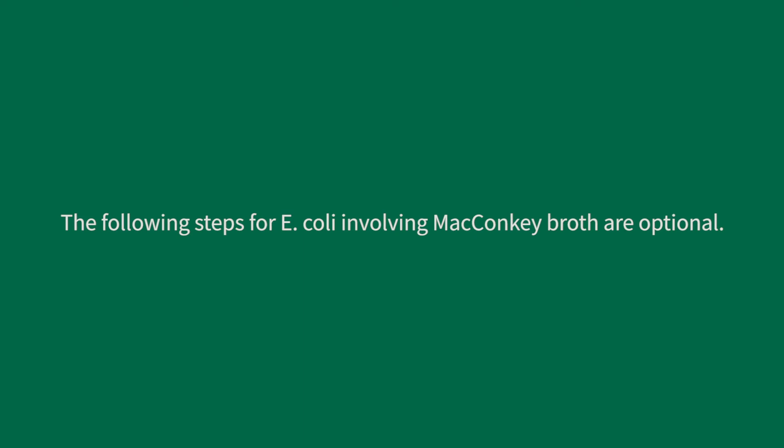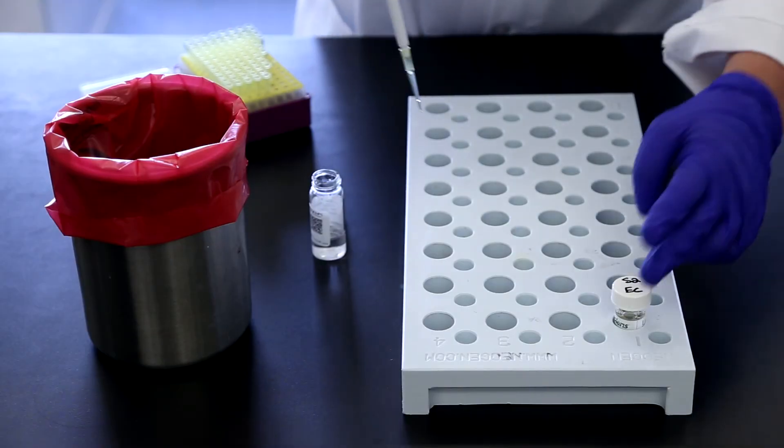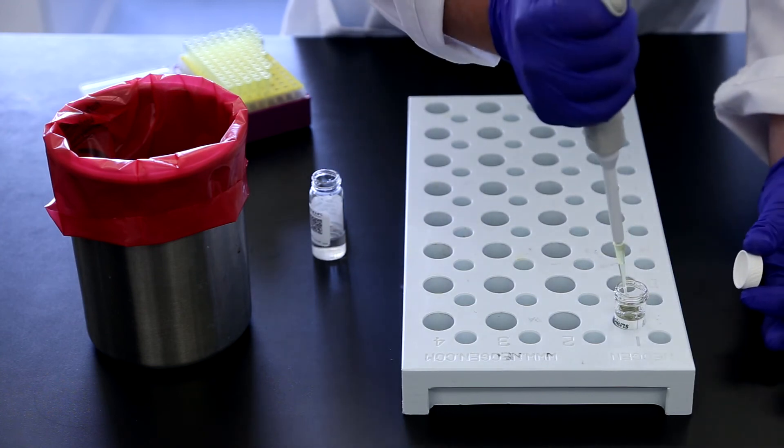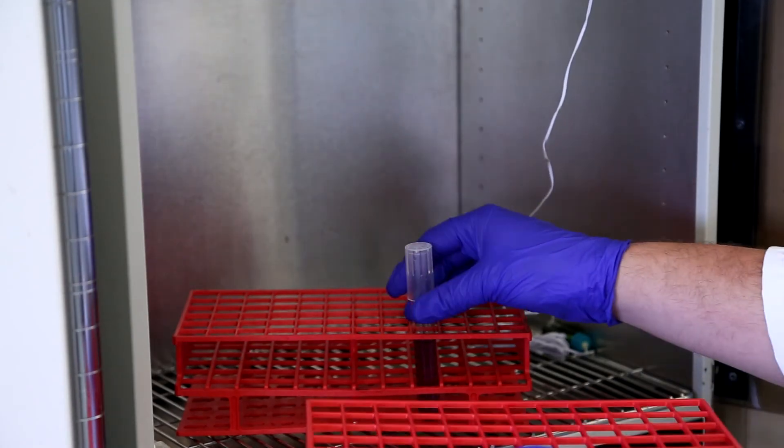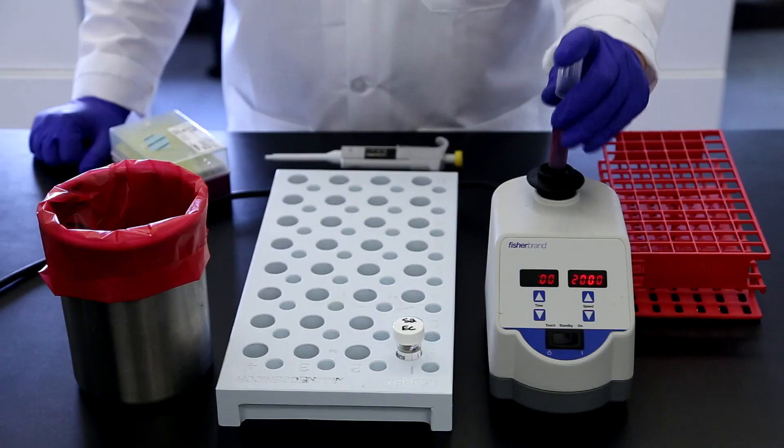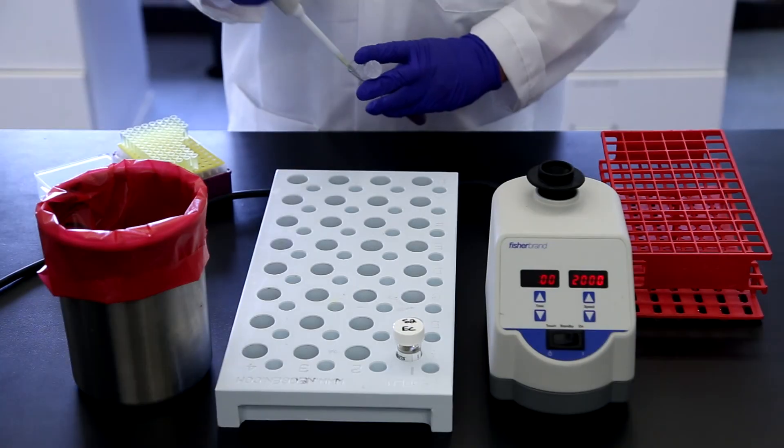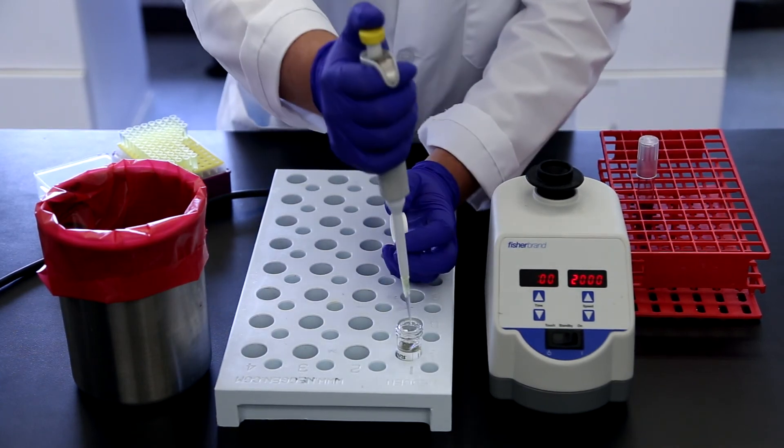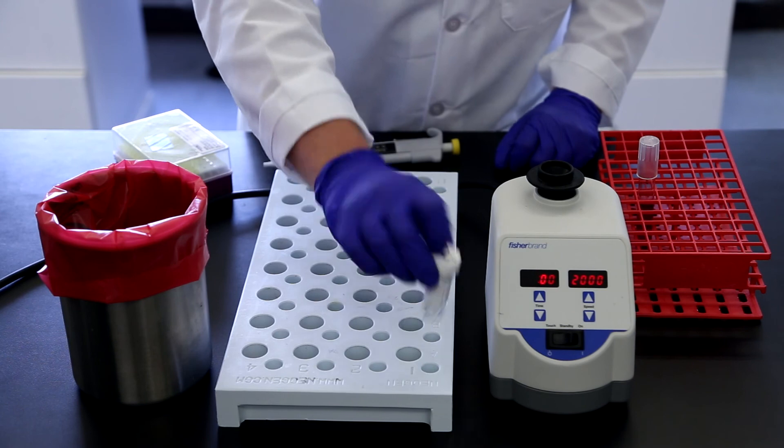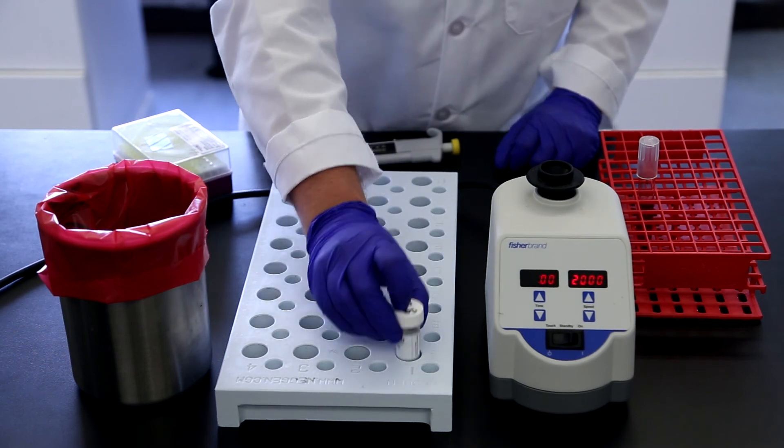The following steps for E. coli involving McConkie broth are optional. Place S2EC vials into the vial rack and supplement as necessary. Remove the McConkie broth from the incubator and mix well. Transfer 0.1 milliliters to the S2EC vial, and gently invert the vial three times and place back into the vial rack.